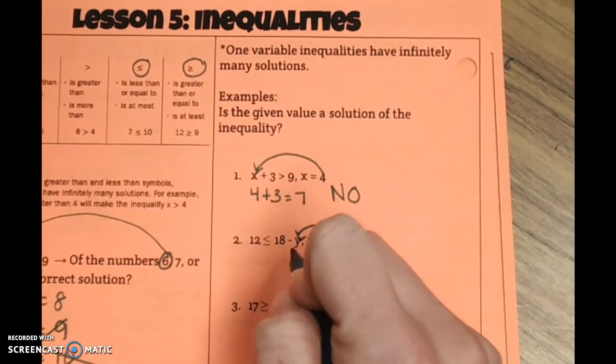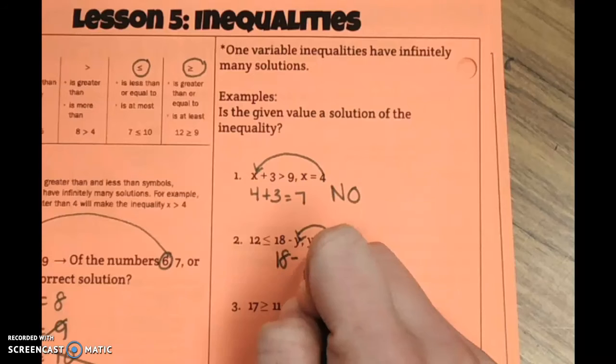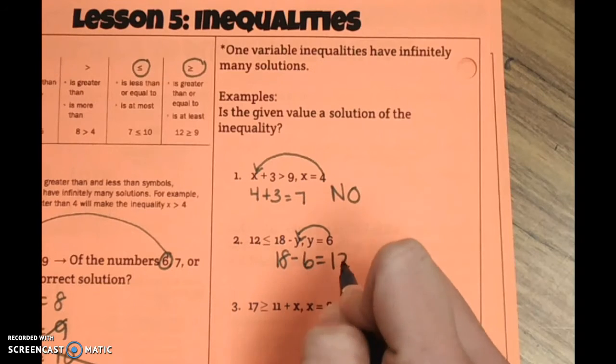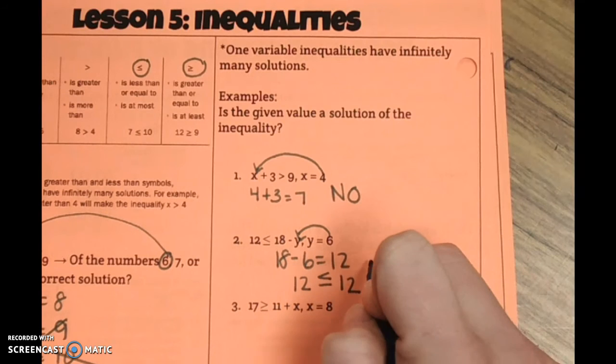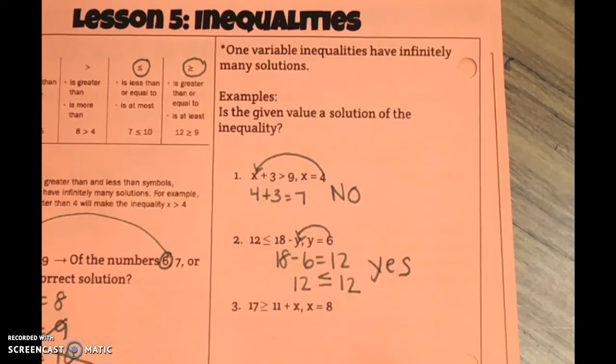Now, we're going to plug 6 in. 18 minus 6 is 12. 12, exactly. It's 12 less than or equal to 12. In this case, yes, because 12 is equal to 12.